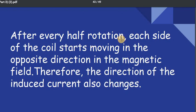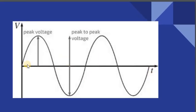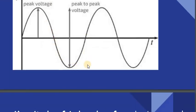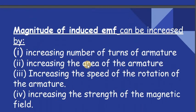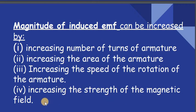After every half rotation, each side of the coil starts moving in the opposite direction in the magnetic field, so the direction of the induced current also changes. The output is alternating: the first half is positive and the next half rotation is negative. The magnitude of the induced EMF can be increased by increasing the number of turns in the armature, increasing the area of the armature, increasing the speed of rotation of the armature, and by increasing the strength of the magnetic field.